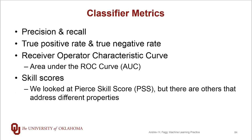We've talked about a variety of different kinds of metrics for classifiers. For binary classifiers it's easy to talk about precision and recall — the true positive rate and true negative rates were very intuitive. When it came time to summarize the behavior of a model before picking a threshold, the receiver operator characteristic curve, or ROC curve, gave us nice intuition, and we can measure performance in terms of the area under that ROC curve. I also gave a hint about skill scores — in particular, the Pierce skill score is something we tend to use in my lab.